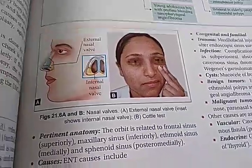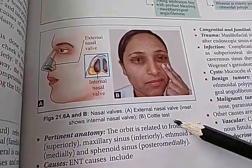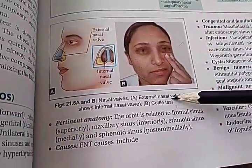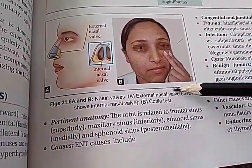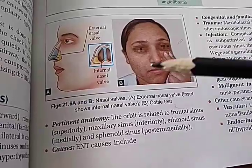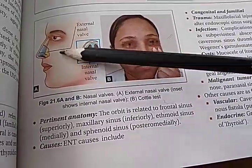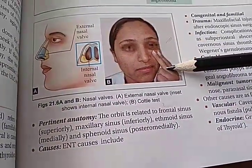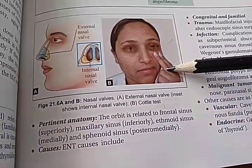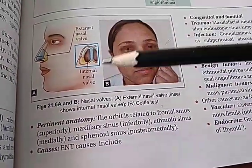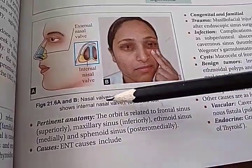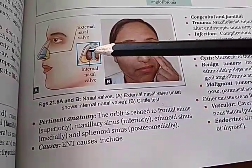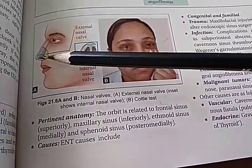The Cottle test — this is the Cottle test for the external nasal valve. The inset shows the internal nasal valve and the external nasal valve.